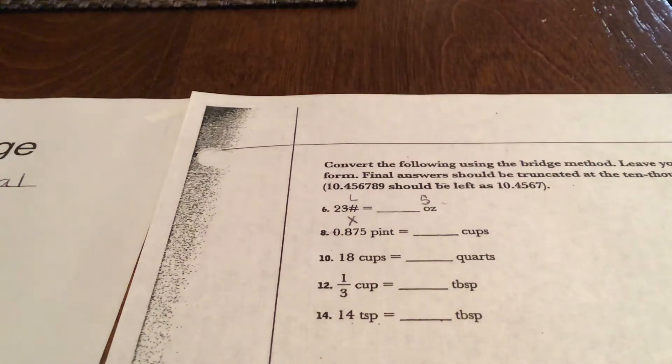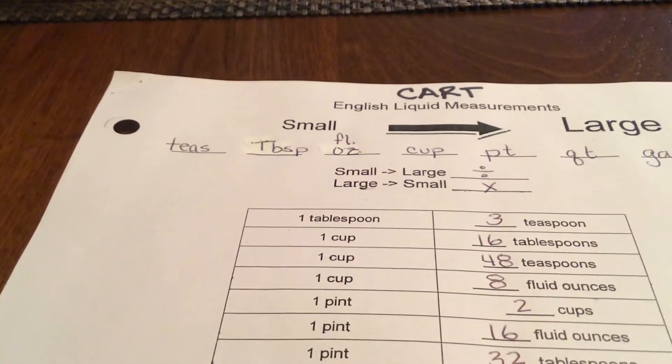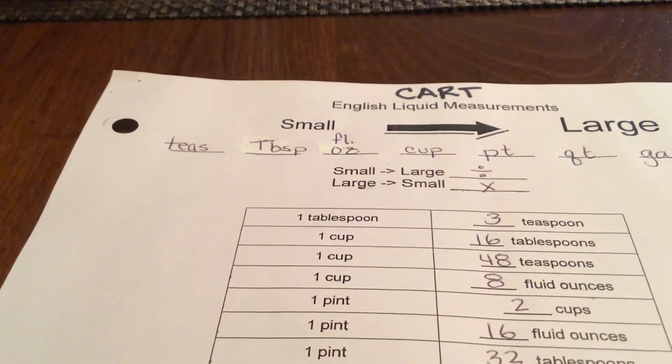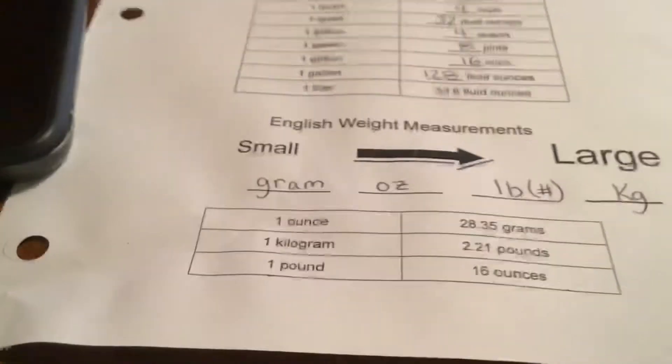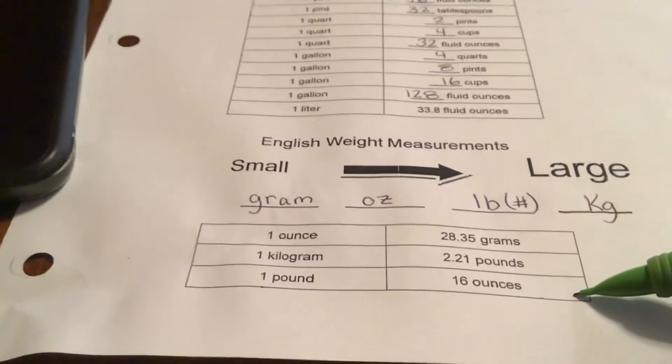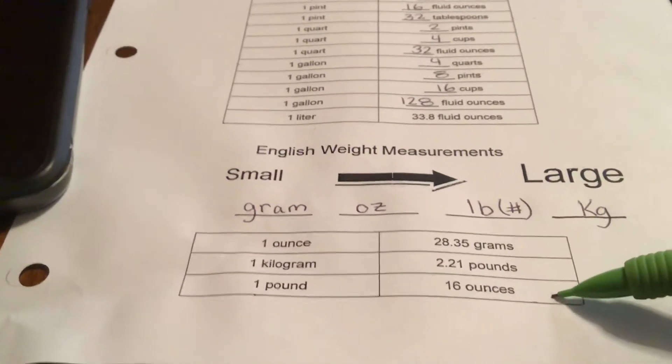And then back on your first page, see large to small we multiply. If you don't know the conversion factor for pounds and ounces, it's right here at the bottom of your table. There's 16 ounces in a pound.